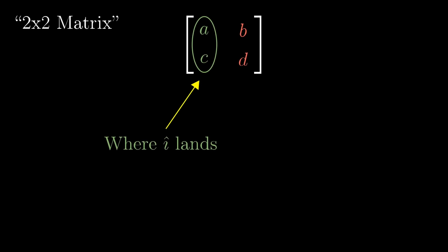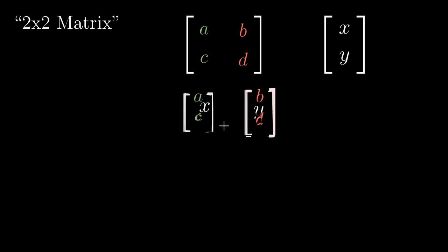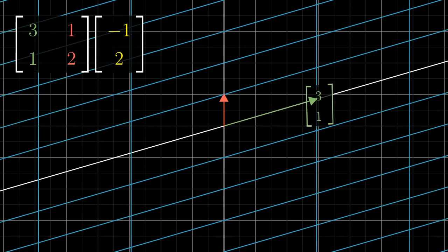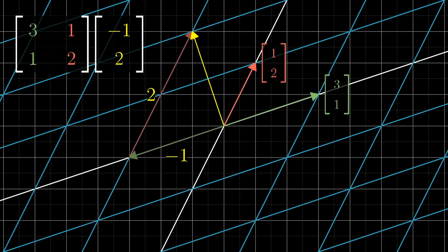The convention is to record the coordinates of where i hat and j hat land as the columns of a matrix, and to define this sum of the scaled versions of those columns by x and y to be matrix vector multiplication. In this way, a matrix represents a specific linear transformation, and multiplying a matrix by a vector is what it means computationally to apply that transformation to that vector.